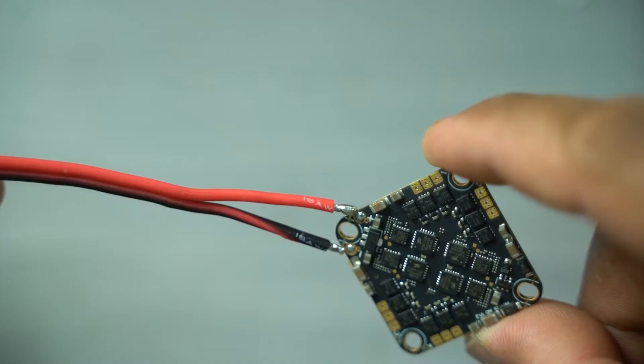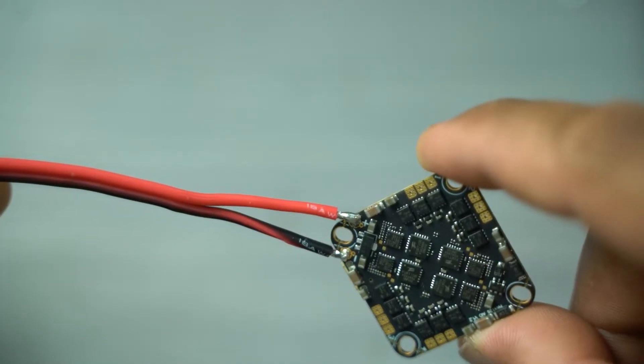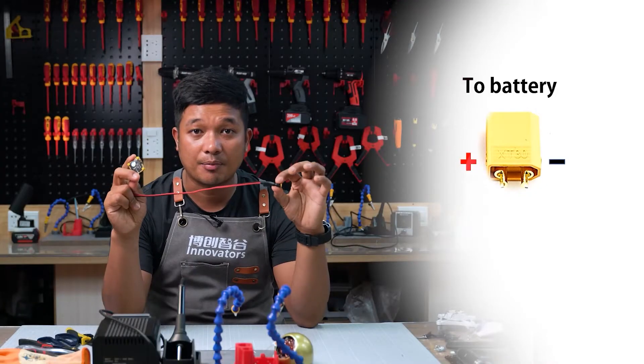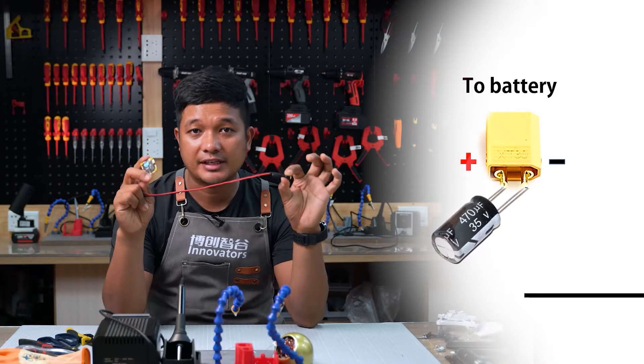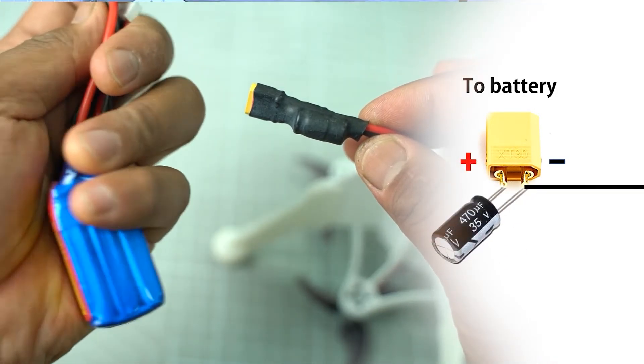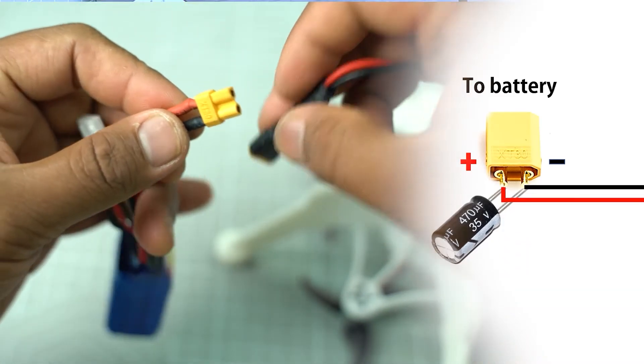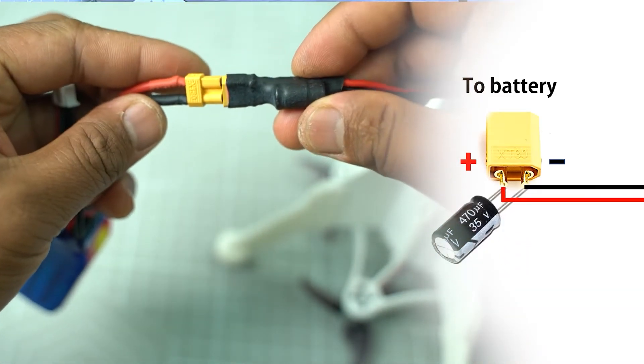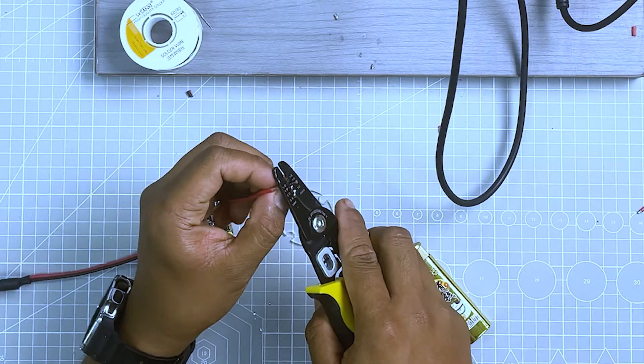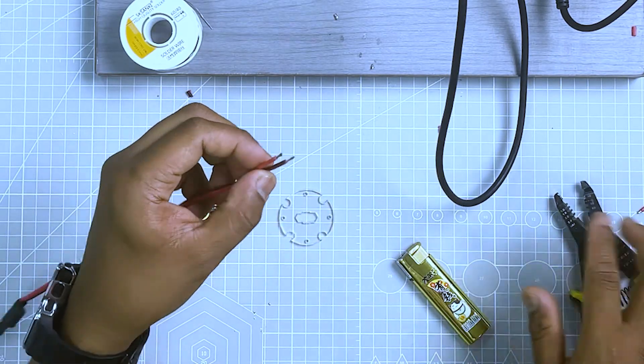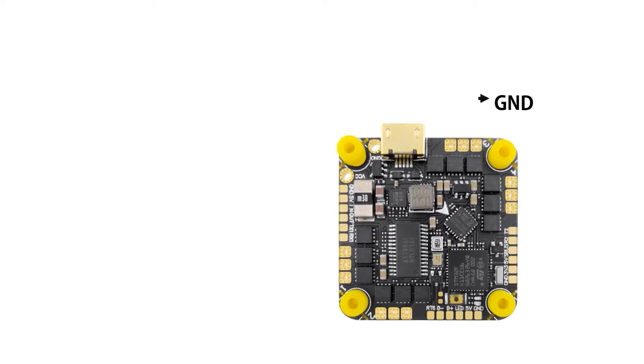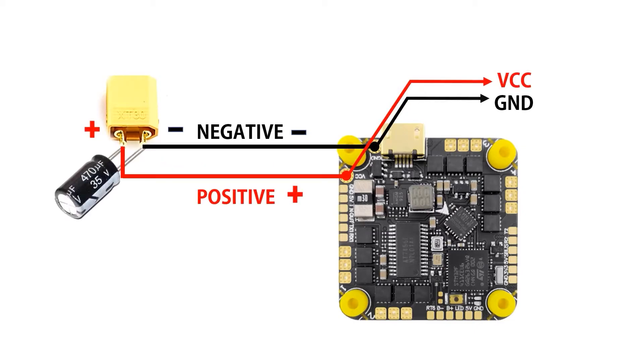What we are going to do next is to solder this power cord to the flight controller. This will be the power source connector to this flight controller. It will be connected to the battery with XT-30 female socket. Strip small insulator to the wire, exposing the conductor. Pinch the wire to make it together. Apply enough soldering lid to each wire.